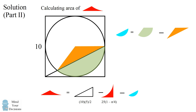In order to calculate these areas, we're going to use formulas for these particular shapes. If we have a circle with radius r and a sector having an angle alpha — in radians — then the area of the sector is equal to r squared times alpha divided by 2. For a triangle with side lengths a and b and an angle beta between them, its area is equal to a times b times the sine of beta divided by 2.